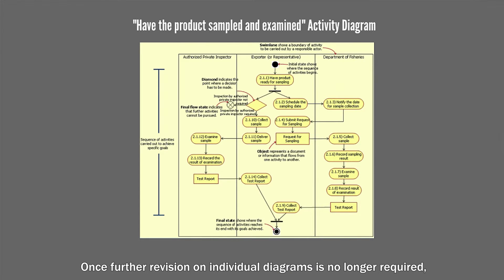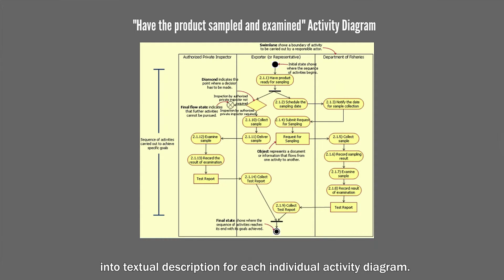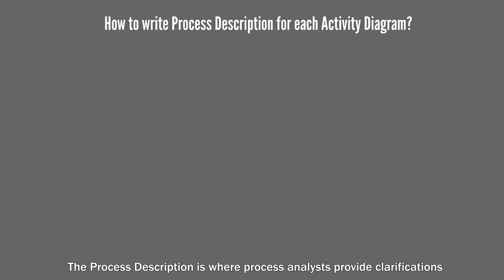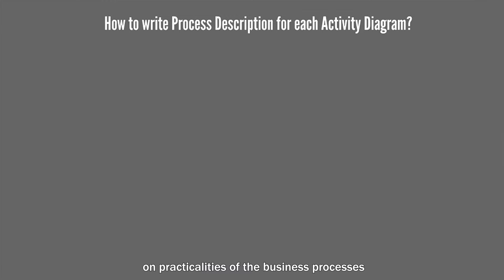Once further revision on individual diagrams is no longer required, process analysts should capture their understandings into textual descriptions for each individual activity diagram. This is the written process description that should be developed for each activity diagram — it is where process analysts provide qualifications on the practicalities of the business processes and each activity listed in that activity diagram.